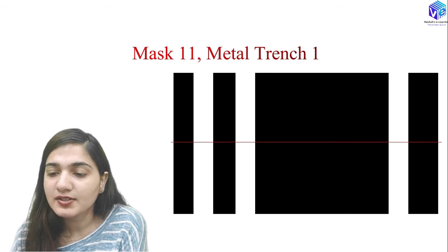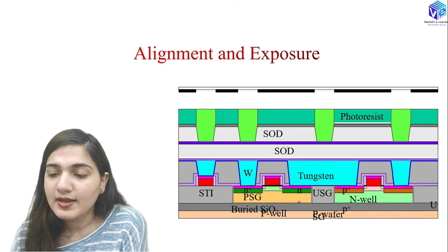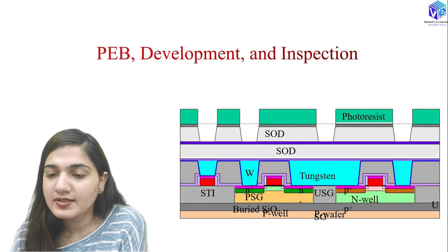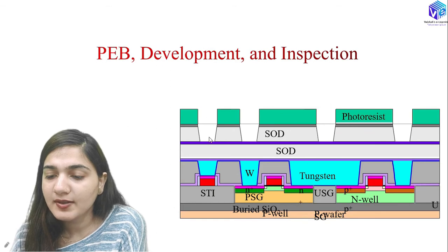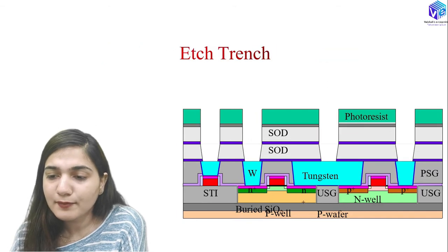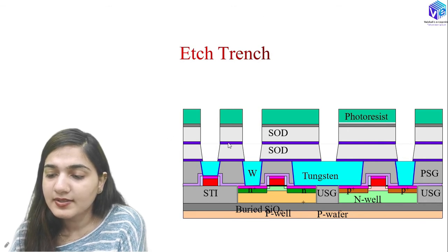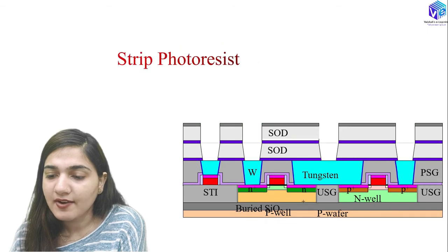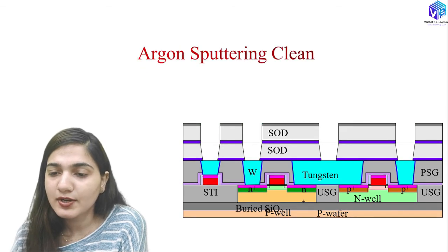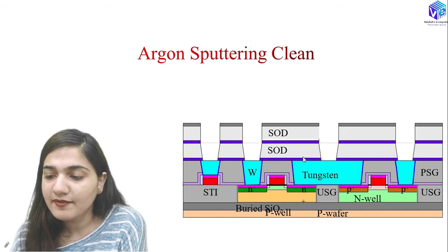Photoresist coating and baking are done again, then mask 11 — the trench-one mask — is used. After alignment, exposure, PEB development, and inspection, the silicon carbide layer and SOD layer are etched to form the trenches. After stripping the photoresist, argon sputtering cleaning gives a clean structure.